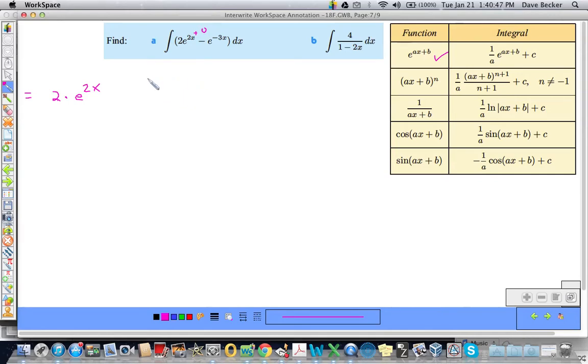E to the 2X, right? And that's going to be multiplied out in the front. It's 1 over A times all this and my A is 2. So I'm going to have 1 half times all of this. So this is – and then that's this term – minus, okay, E to the negative 3X times and then I have to take 1 over negative 3.